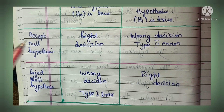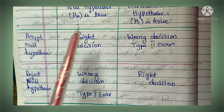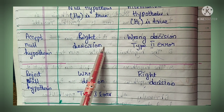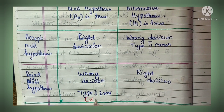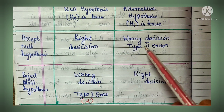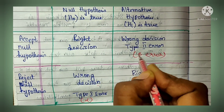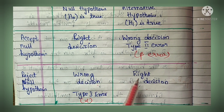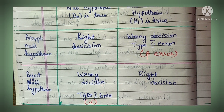The same thing has been represented in a tabular column. When H0 is true: accepting the null hypothesis is the right decision; rejecting the null hypothesis results in type 1 error, also called alpha error. When H1 is true (null hypothesis is false): accepting the null hypothesis leads to the wrong decision - type 2 error, called beta error. Whereas if H1 is true and you reject the null hypothesis, that is the right decision. We have already posted a detailed video on type 1 and type 2 error on our channel.